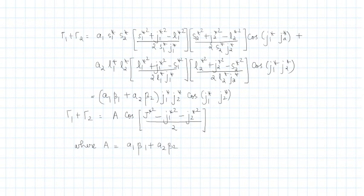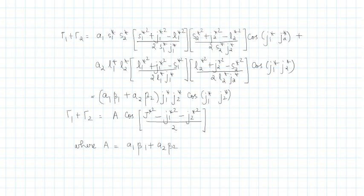Sorting this term gives an expression of the form (A1·β1 + A2·β2)·j1*·j2*·cos(j1*j2*). You can evaluate what exactly β1 and β2 are. For the part j1*·j2*·cos(j1*j2*) you can apply the cosine law, and the initial bracketed part can be written as another constant A. This is the relation obtained for gamma1 plus gamma2.